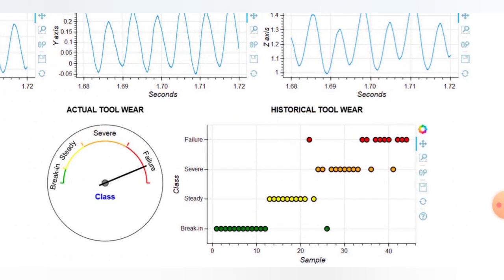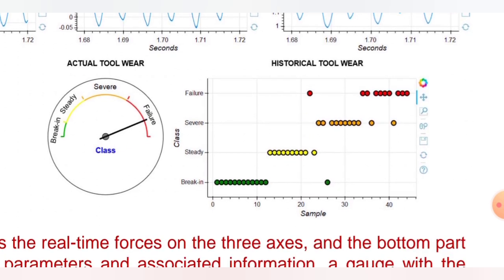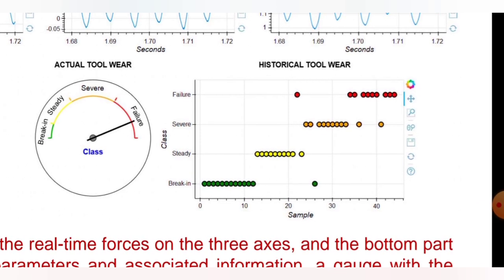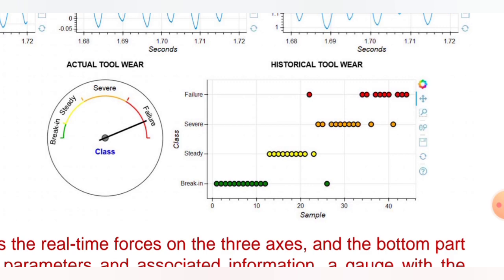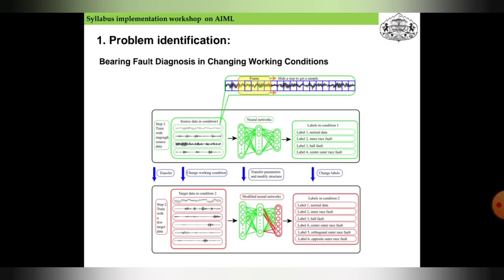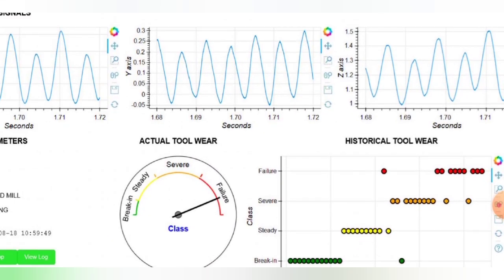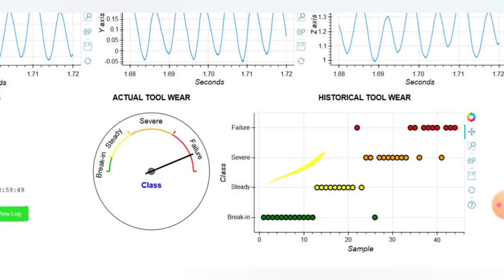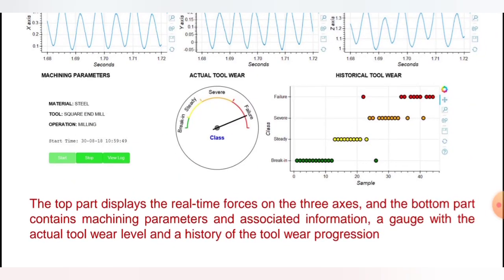The history of the tool wear can be plotted with the help of samples and process class. Starting breaking is given in greenish color. If it is steady wear of the tools, it is given in yellow color, as you can see these points. And the severe is shown in orange colors, severe wearing. And the failure is indicated in red color.